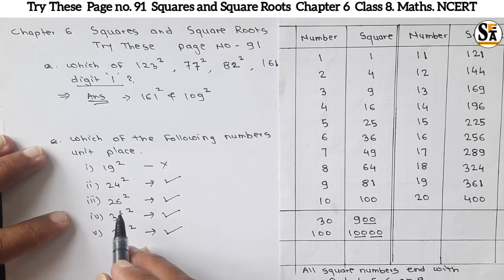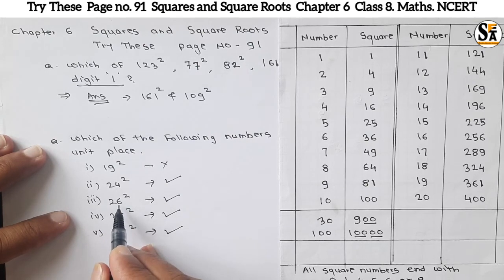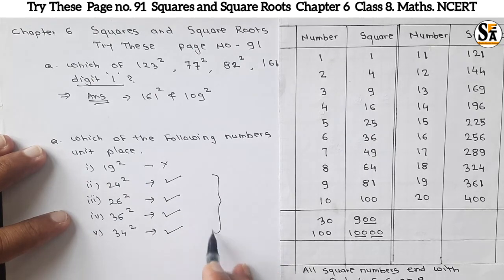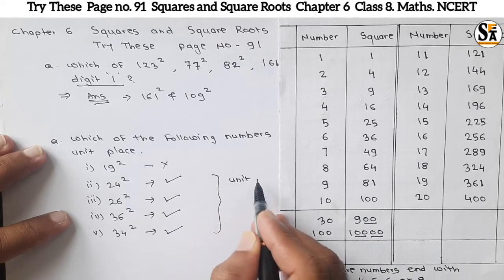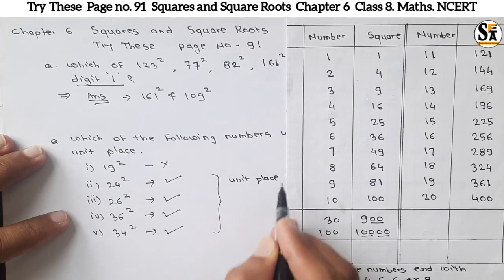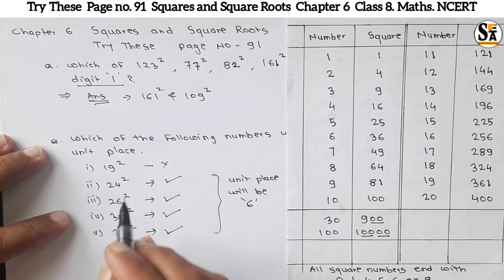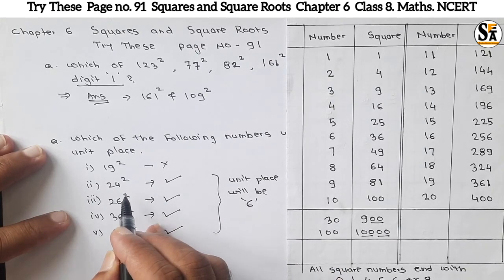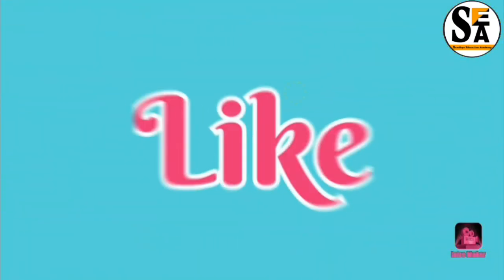Always remember: if a number ends with either 4 or 6, then the square of that number will always end with digit 6 at the unit place. This is all for this video. We will meet again in our next video. Do learn, do enjoy. Thank you.